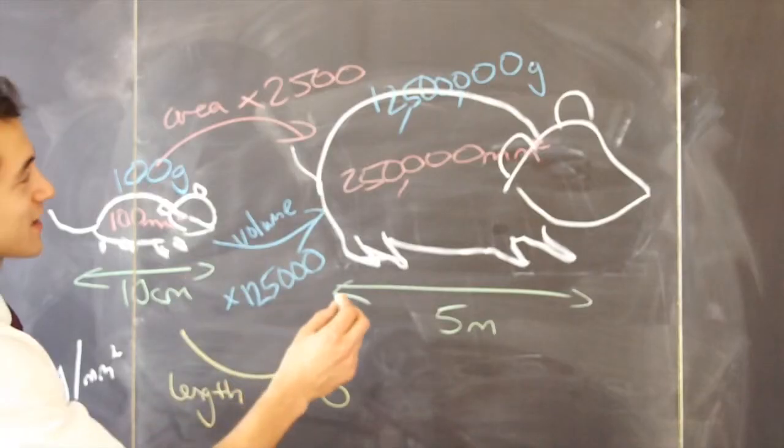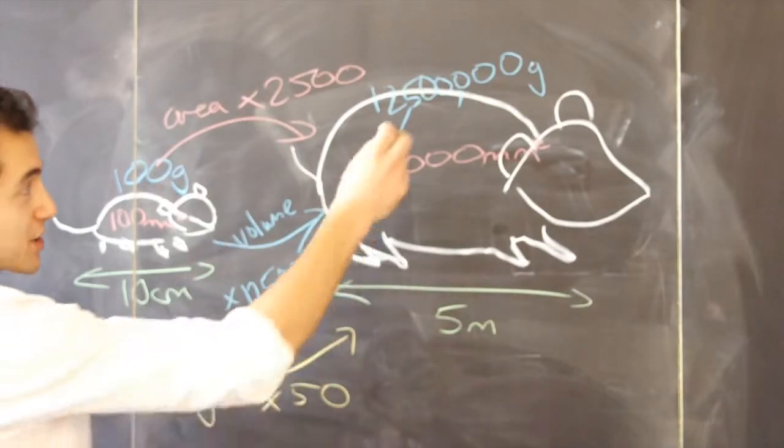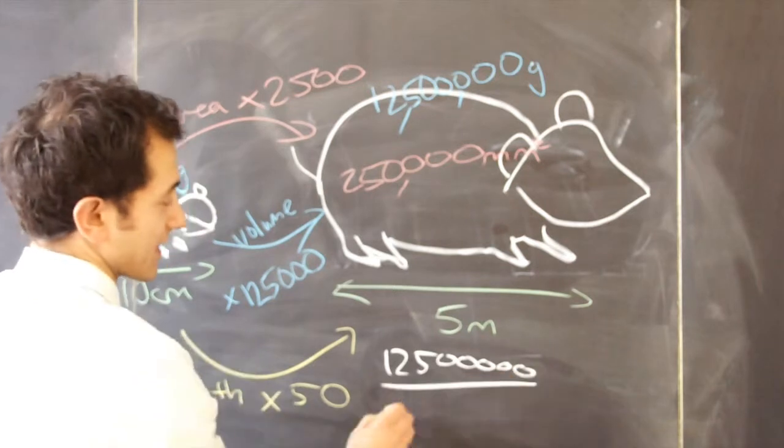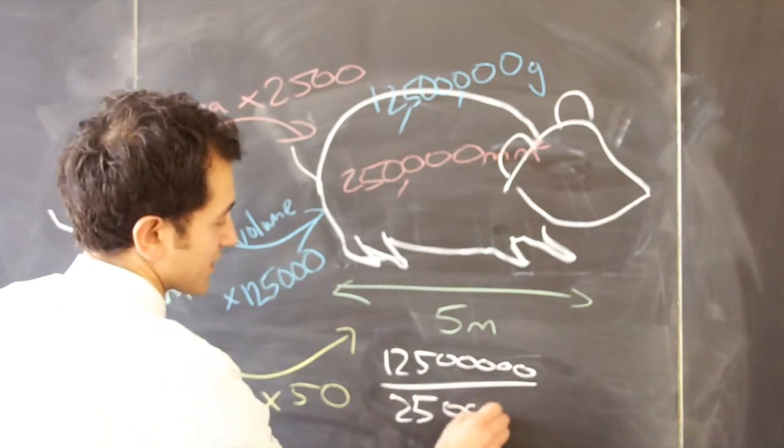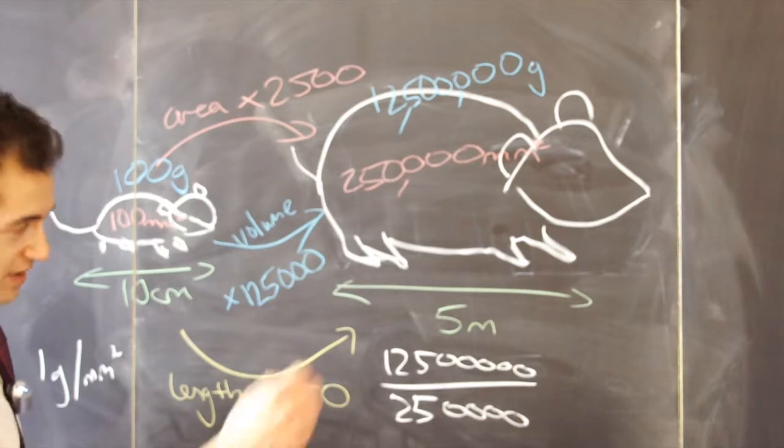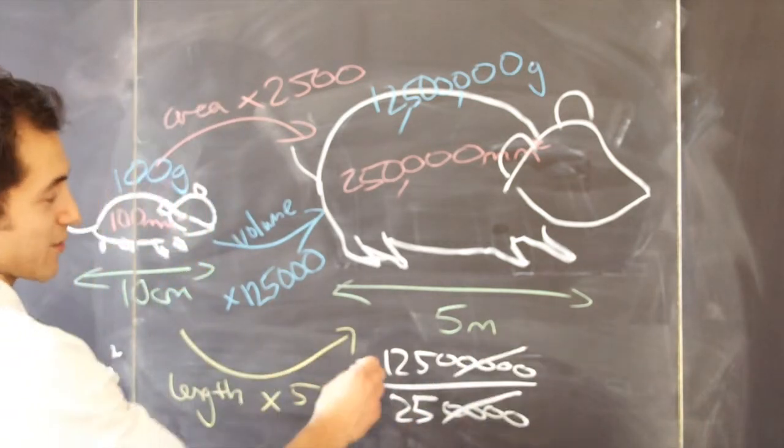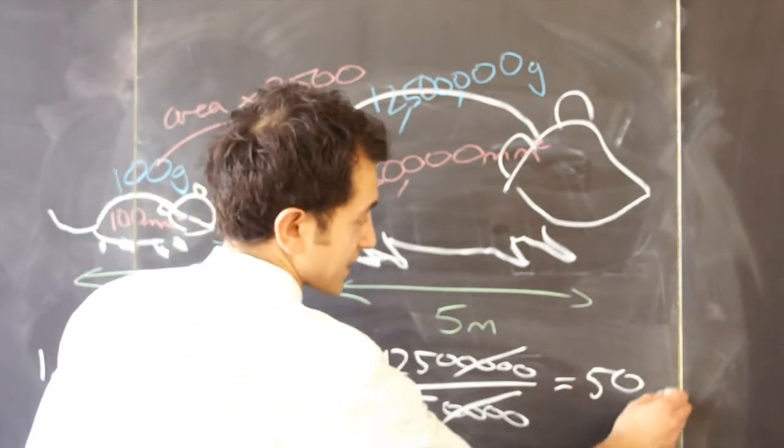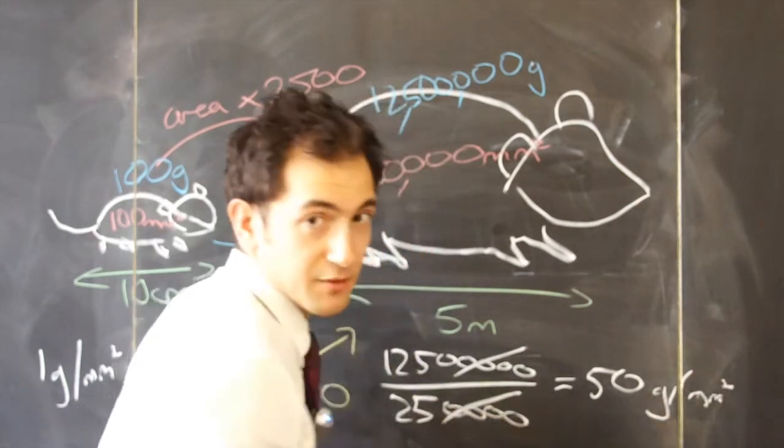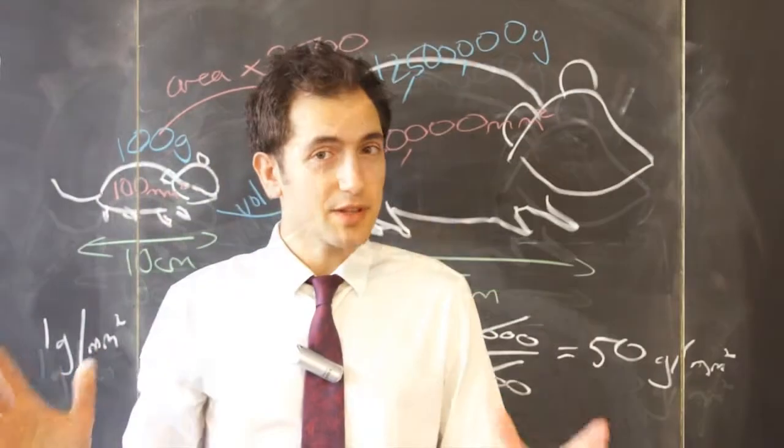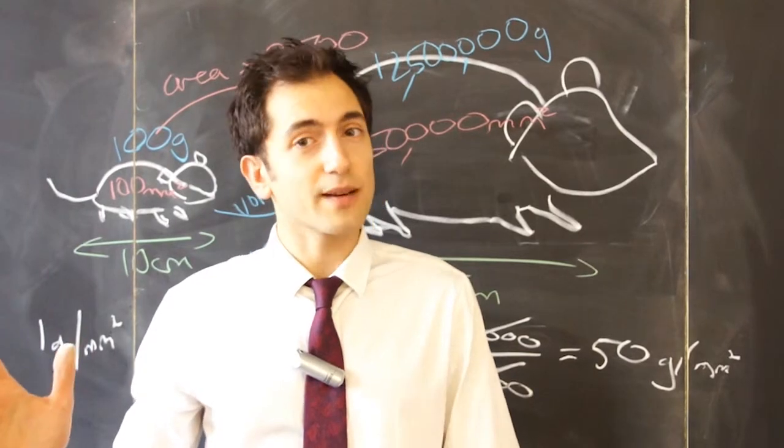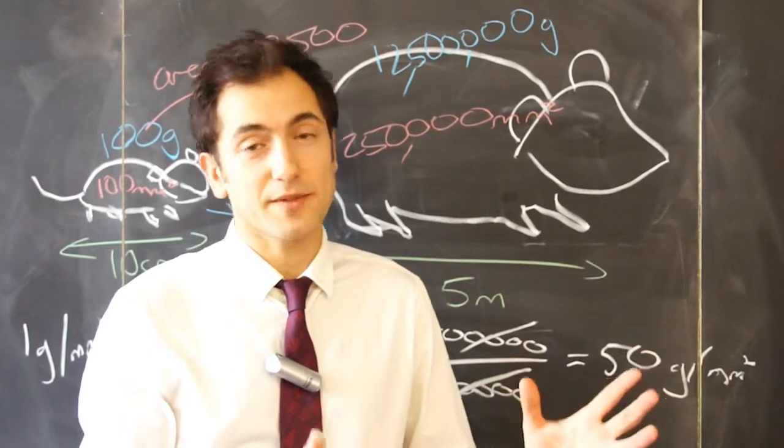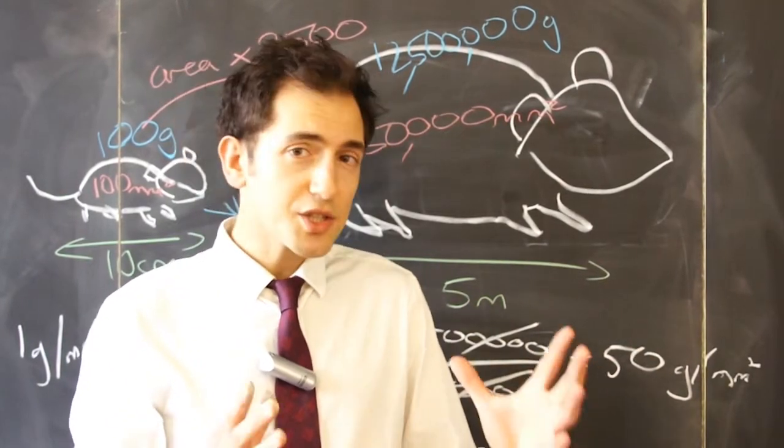For the large mouse, let's look at the pressure calculation there. So we have a mass of 1, 2, 5 with lots of zeros, grams, and an area of 25 with some zeros, millimetres squared. Let's divide the top and bottom by 10,000. And then we have 1,250 divided by 25, which is 50 grams per millimetre squared. So the little mouse that we're familiar with, his legs carry just 1 gram for each millimetre squared of leg. But the big mouse, his legs have to carry 50 grams for each millimetre squared of leg. And they're just not built to do that.